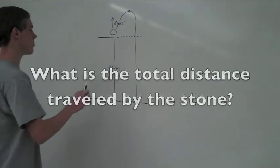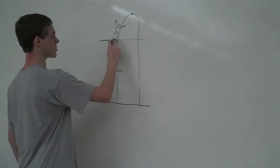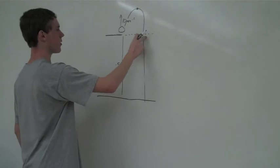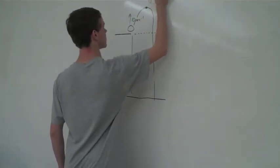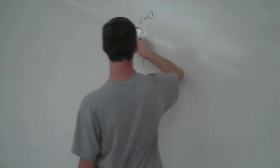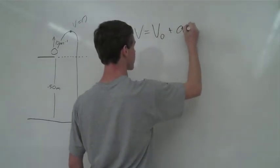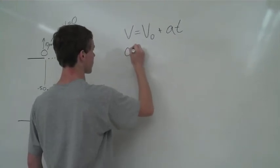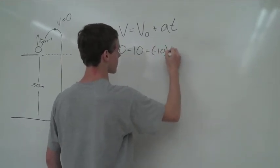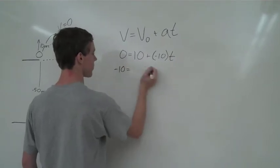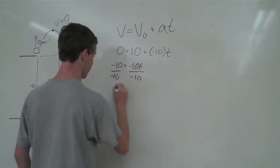For the next part of the problem, we're finding the total distance traveled by the stone. We know the cliff is 50 meters, but we also need the distance the stone travels upward from the origin to its highest point. We split the journey at the vertex where velocity equals zero. Using final velocity equals initial velocity plus acceleration times time, with final velocity = 0, initial velocity = 10, and acceleration = negative 10, we find t equals 1 second.